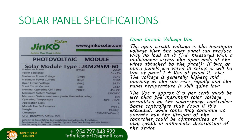Let's look at the open circuit voltage, a very important specification when doing various designs. The open circuit voltage, that is the VOC, is the maximum voltage that the solar panel can produce with no load on it. It is normally measured with a multimeter across the open ends of the wires attached to the panel. If two or more panels are wired in series, it would be the VOC of panel 1 plus the VOC of panel 2 plus the VOC of panel 3, et cetera.